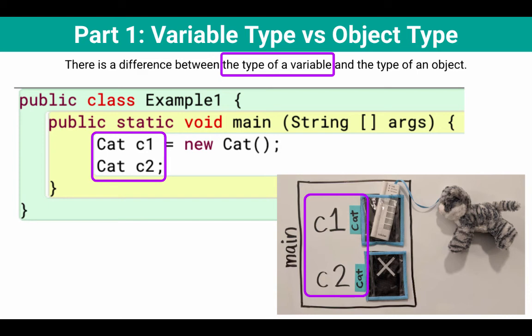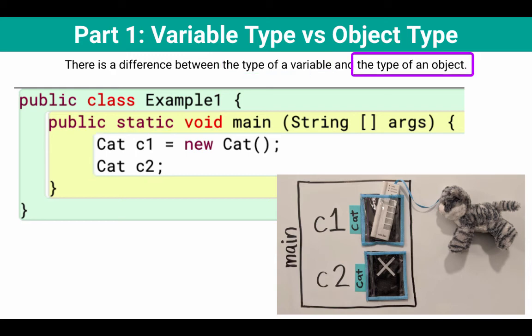And we can see that in our picture, those two variables, and then we list the type of it sort of horizontally on that blue piece of paper. Then the type of an object, that was either a cat object or with c2, we didn't even set it to anything. So there wasn't an object.